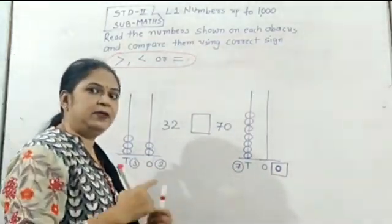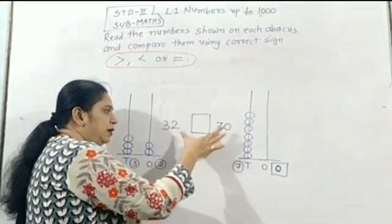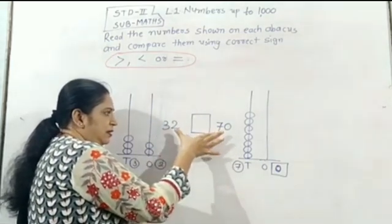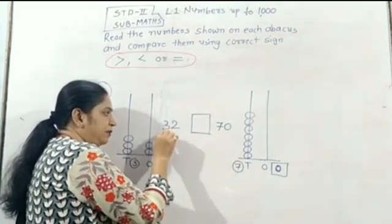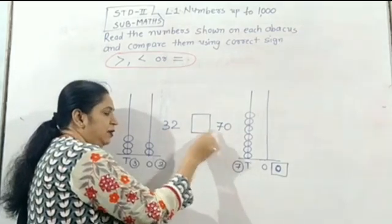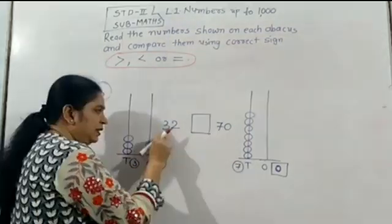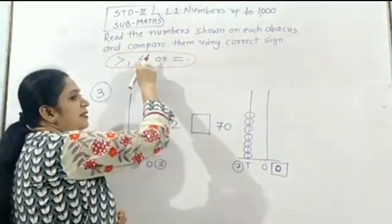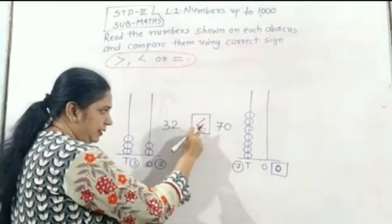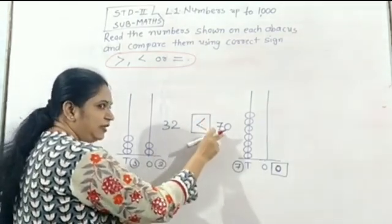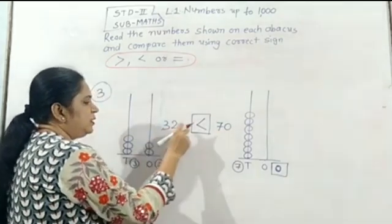Now we have to compare the numbers. Here the tens number is three and the tens number is seven. From three and seven, which is greater? Simply, three is smaller and seven is greater. So 32 is smaller and 70 is greater. So we use the smaller sign because 32 is the smaller number.